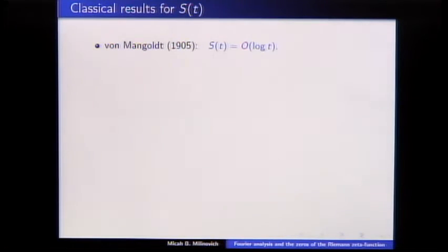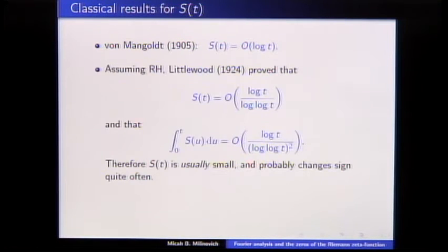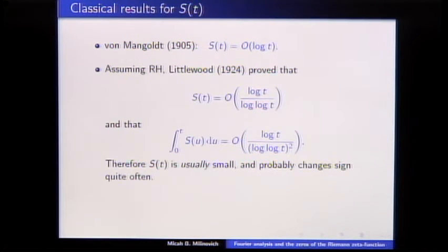I'm going to focus on how big S(t) can get. The classical result from 1905: von Mangoldt showed it's no more than constant times log T. So typically it's square root of log log T, and unconditionally we know it's log T. Littlewood showed you can do a little bit better assuming RH — you can save a factor of log log — and in fact the antiderivative, the integral of S, is even smaller.